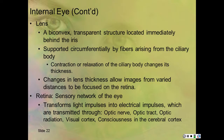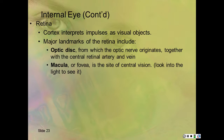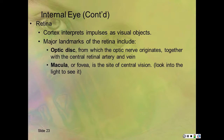The retina is the sensory network of the eye. It transforms light impulses into electrical impulses, which are transmitted through the optic nerve and optic disc back to the brain. The retina interprets pulses as visual objects. Its major landmarks are the optic disc—where the optic nerve originates together with the retinal artery and vein—and the macula, or fovea centralis, also called the fovea centralis, which is the site of central vision.